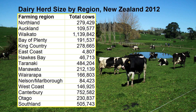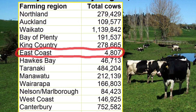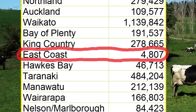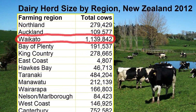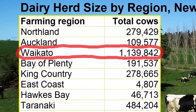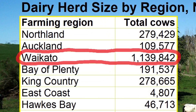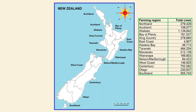In this case I'm going to use data on dairy cattle by herd size in 2012 for New Zealand. The data ranges from 4,800 cows for the East Coast region to about 1.1 million cows for the Waikato region. I've got an outline map of New Zealand divided into all the various regions.